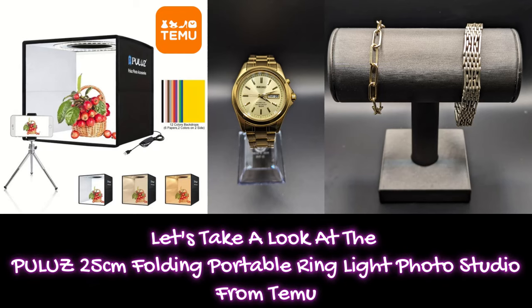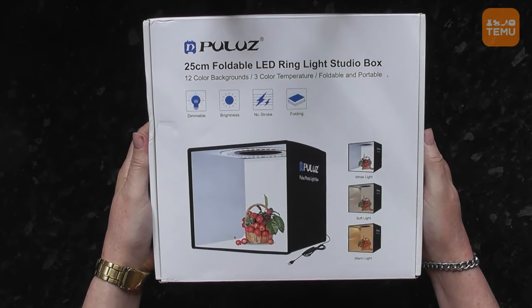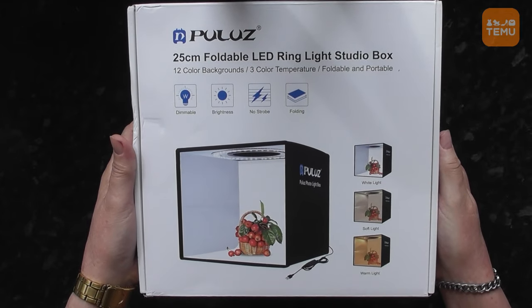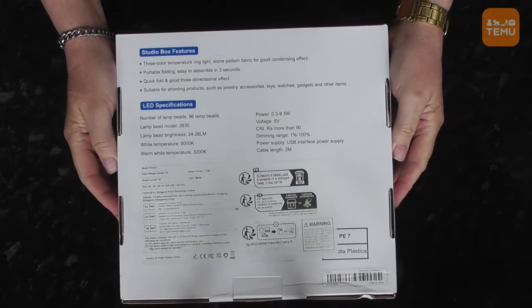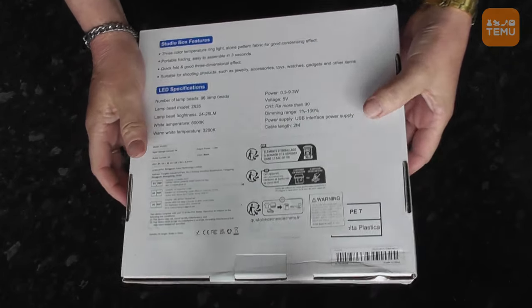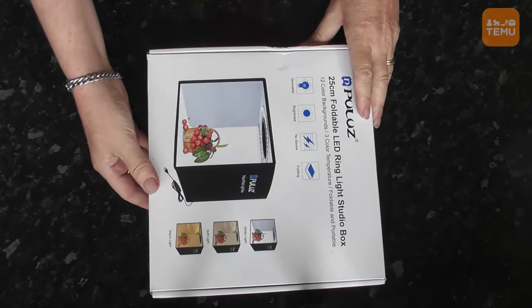Let's take a look at the Puller's 25cm Folding Portable Ring Light Photo Studio from Taimu. Portable Photo Studio Light Box. The size is 25cm or 9.8 inches, specially designed for people who love photography to take professional pictures.